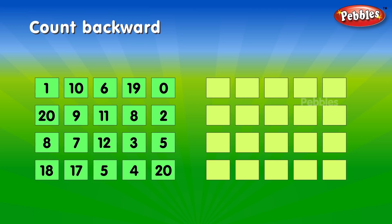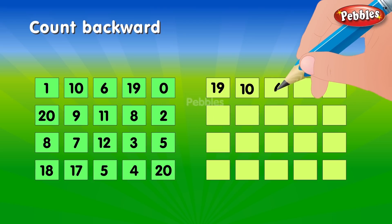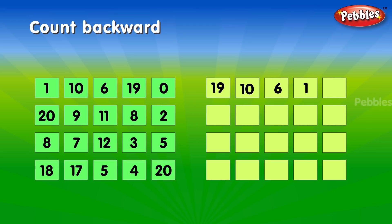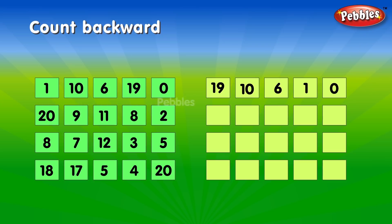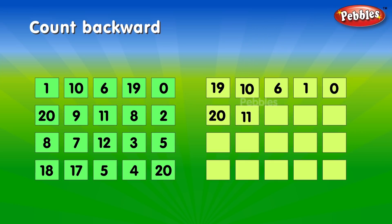Count backward. 1, 10, 6, 19, 0. 19, 10, 6, 1, 0. 20, 9, 11, 8, 2. 20, 11, 9, 8, 2.